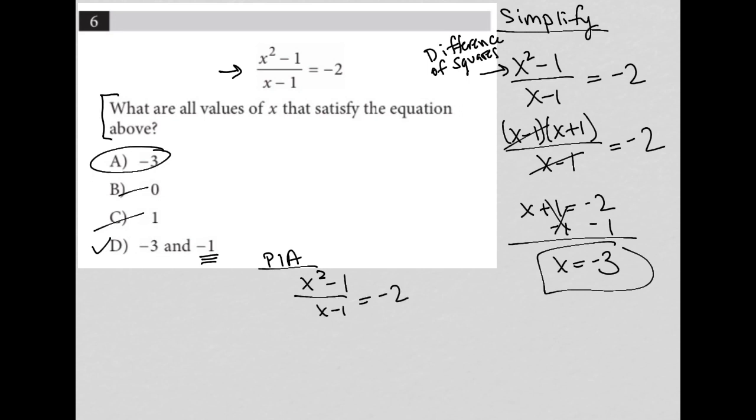I should be able to plug in x equals negative 1 and see if, in fact, that works. So when I plug that in, this becomes parentheses negative 1 squared minus 1 over, again, negative 1 minus 1 in the denominator.